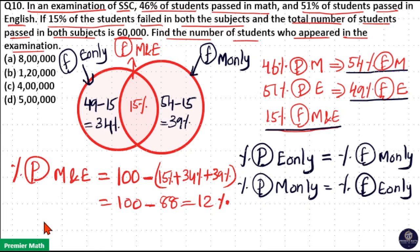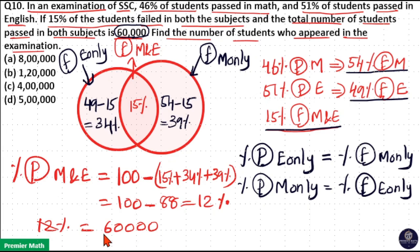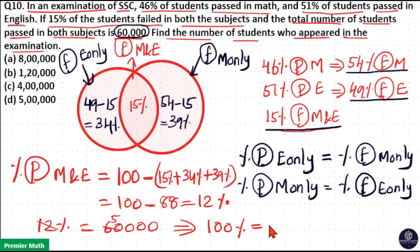So this 12% is equal to the number of students who passed in both subjects, that is 60,000. Since 12% equals 60,000, then 1% equals 5,000, meaning 100% equals 500,000. So the total number of students who appeared in the examination is 500,000. Option D is your answer.